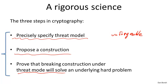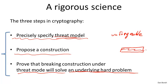Second, we propose a construction. Third, we give a proof that any attacker able to attack the construction under the threat model can also be used to solve some underlying hard problem. As a result, if the problem really is hard, no attacker can break the construction. In the case of signatures, for example, we'll say that anyone who can break our construction can then be used to factor integers, which is believed to be a hard problem. We'll follow these three steps throughout the course.